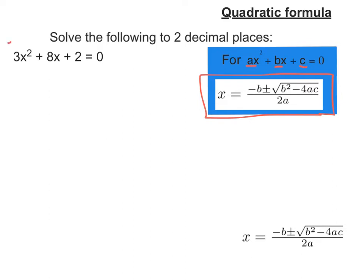So let's look at this example. A is the coefficient of x squared, so in that case A is 3. B is the coefficient of x, so B is equal to 8. And C is the constant term, so C is equal to 2.